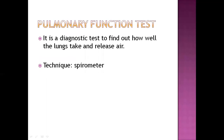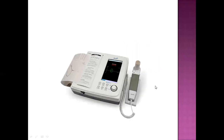Pulmonary function test helps to find out how well the lungs take in and release air. It is done using a spirometer. The technique involves placing the patient in a sitting position, handing the mouthpiece to the patient, and having them do mouth breathing while the nose is clipped. The breathing is recorded by the device and graphically presented on paper, which helps find out the capacity of the lungs.